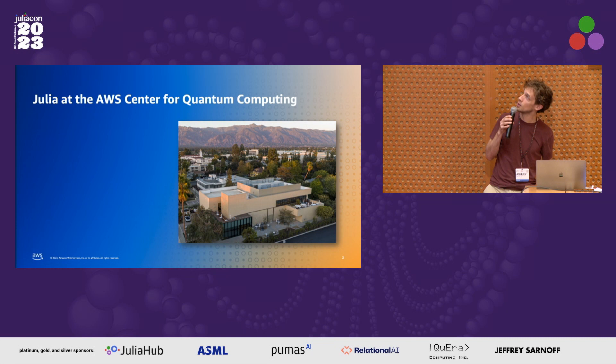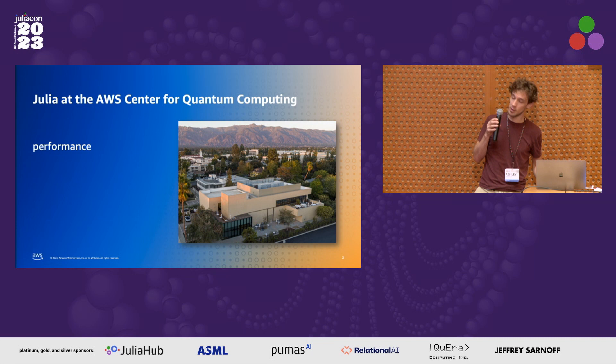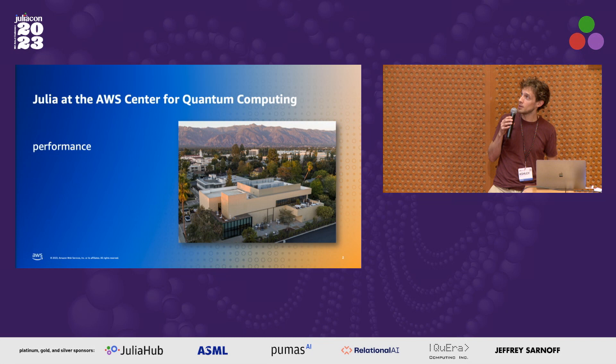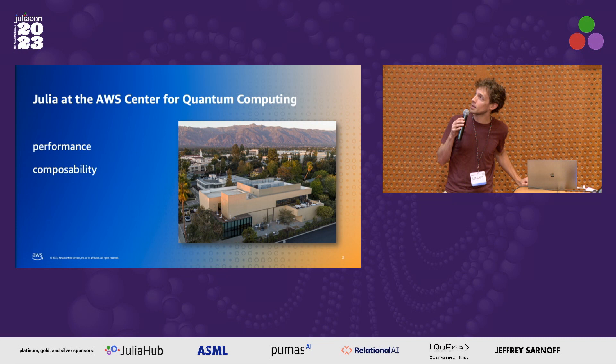This is a picture of our location in Pasadena — it looks a bit different around here, it's a little drier at the moment. Why do we use Julia at the Center for Quantum Computing? It's mainly for doing simulations related to developing quantum devices. We want to understand how these devices work and how to optimize them, and we like to have good performance in these simulations, especially when the quantum systems get a bit larger.